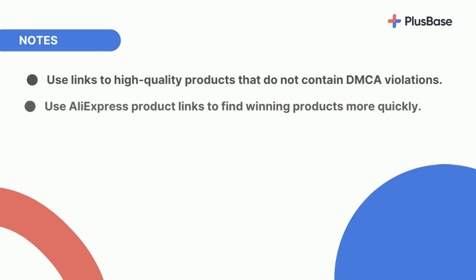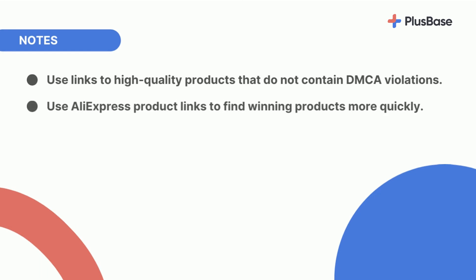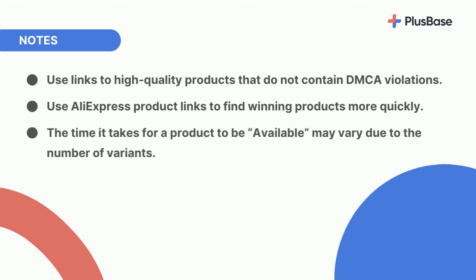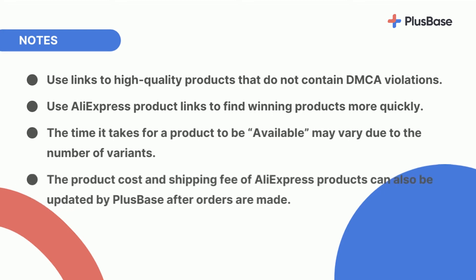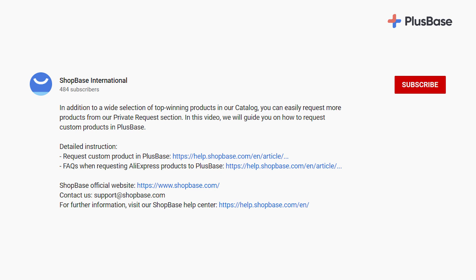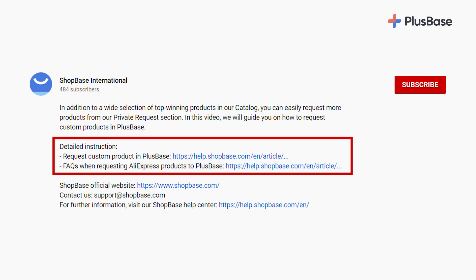You can use an AliExpress product link to find your winning products more quickly. Please note that the time it takes for a product to be available may vary due to the number of variants. In addition, the product cost and shipping fee of AliExpress products can also be updated by Plusbase after orders are made. You can check out the article in the description box for more information on product requests from AliExpress.